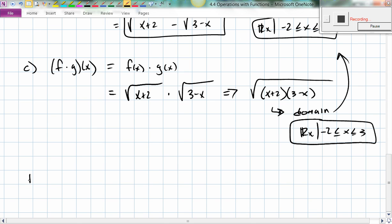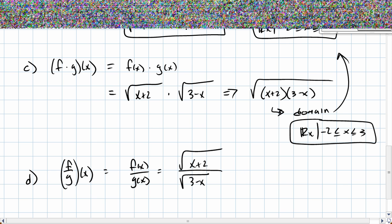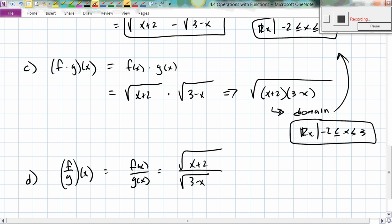In part D, though, something does need to change. So let's figure out f divided by g quantity of x. So that would just be f of x over g of x, right? Which is the square root of x plus 2 divided by the square root of 3 minus x, okay?